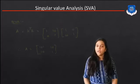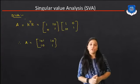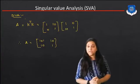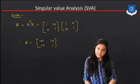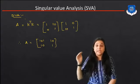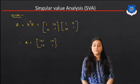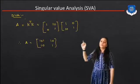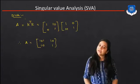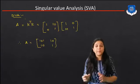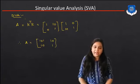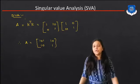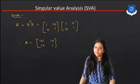Now let's find the SVA for the same steady-state gain K. The equation for SVA uses K transpose times K. The transpose of K [1, 0; 10, 1] is [1, 10; 0, 1]. Multiplying these two matrices, we get matrix A equal to [1, 10; 10, 101].